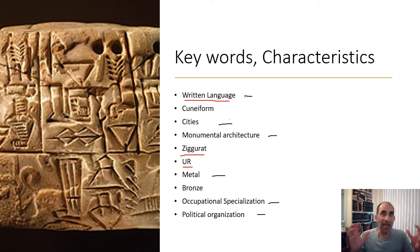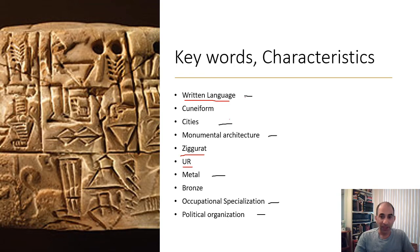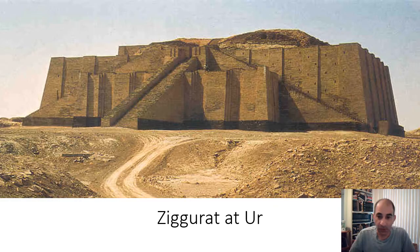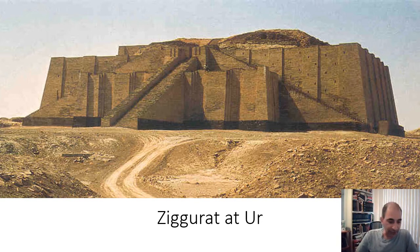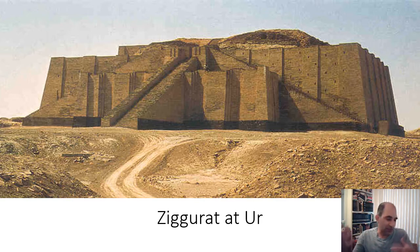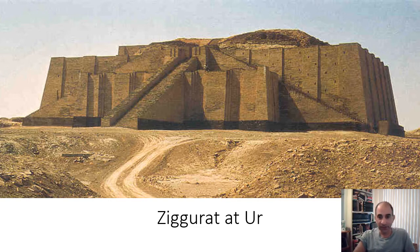Those are the things that distinguish civilization from pre-civilization. Now here is the Ziggurat — a big example at the city of Ur, located in modern-day Iraq. This is a good example of monumental architecture that many students haven't been familiar with. Most people have heard of the Pyramids and the Colosseum, so I always like to use the Ziggurat as an earlier example of monumental architecture.